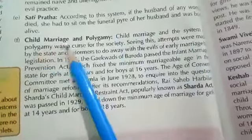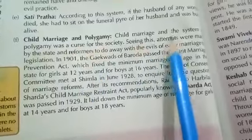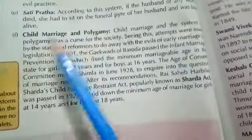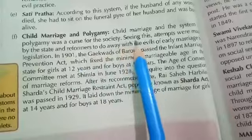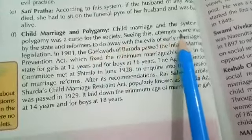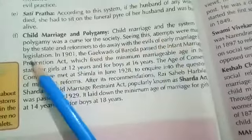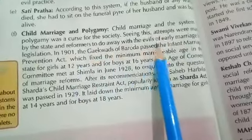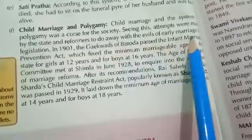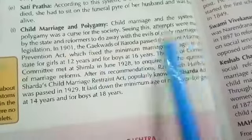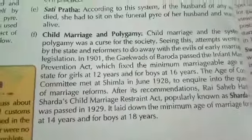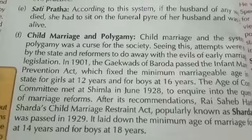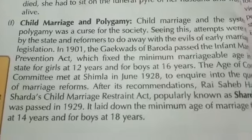Child marriage and polygamy were also a curse of society. Seeing these evils, attempts were made by the state to reform and do away with the evil of early marriage through legislation.